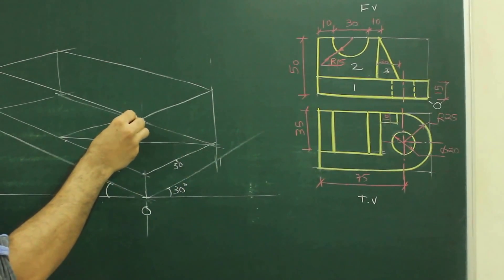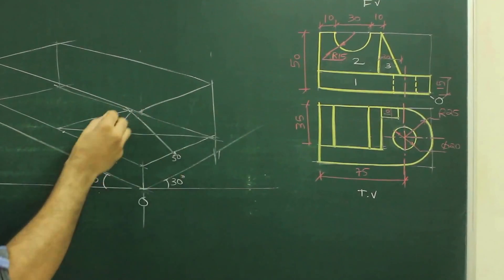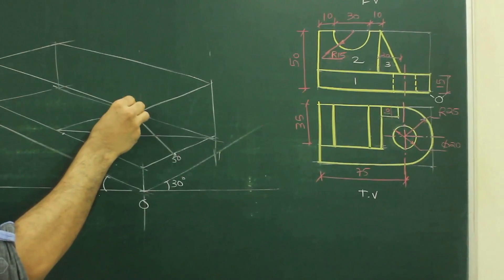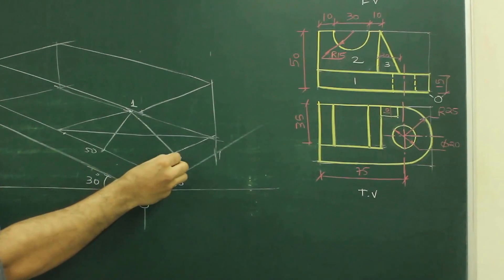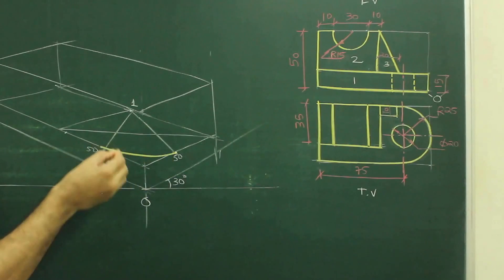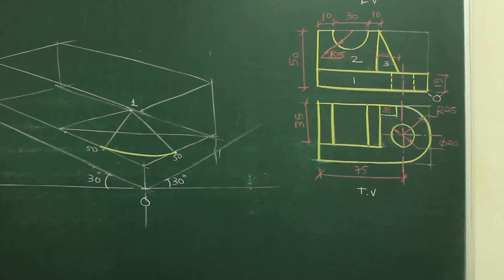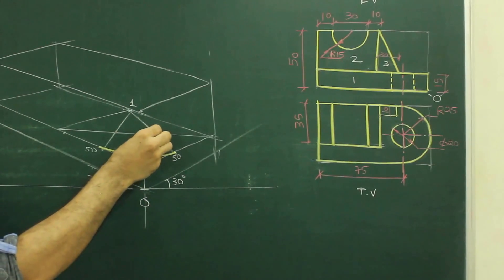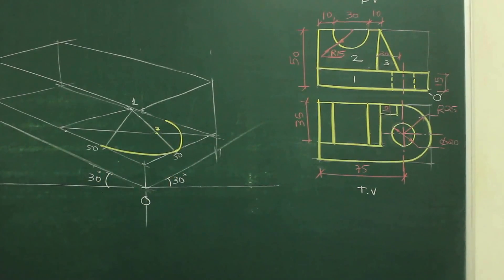From this corner, join this midpoint. So this is, let's say, point 0.1. So from 0.1, we can draw this radius. See this. And from 0.2, we can draw this radius.